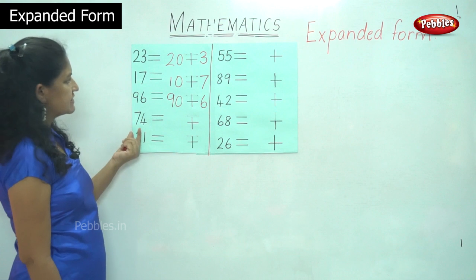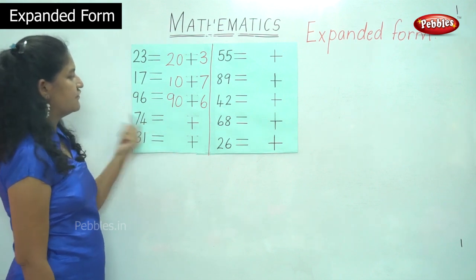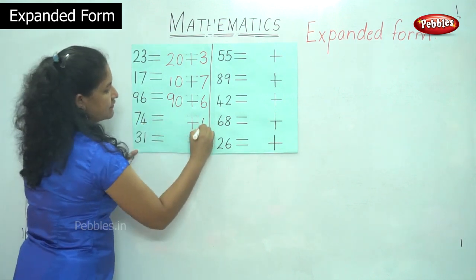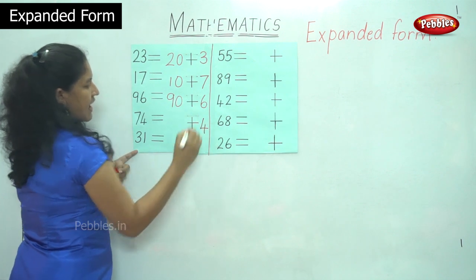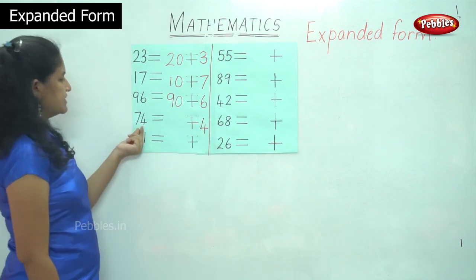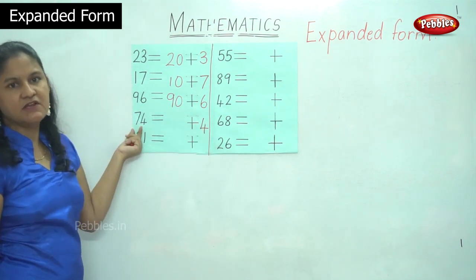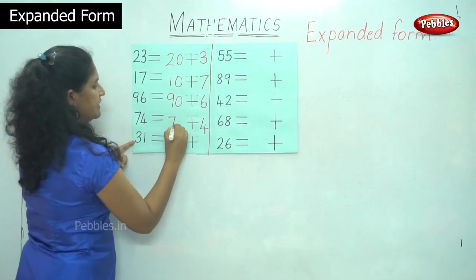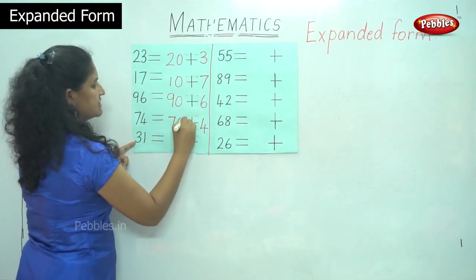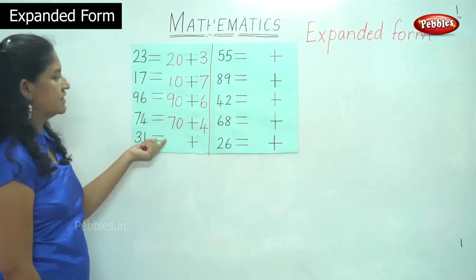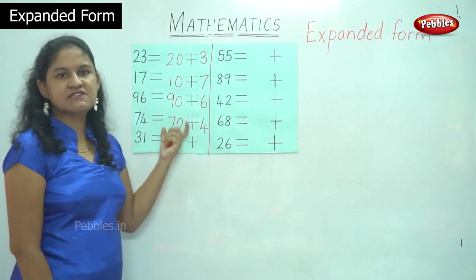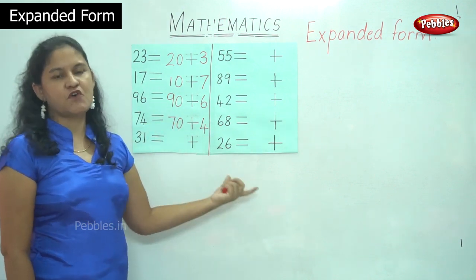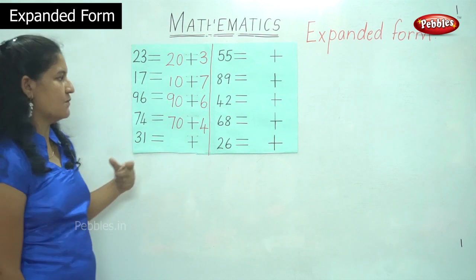The next number is number 74. In the ones place I have number 4 and in the tens place I have number 7. 7 tens is 70. So 74 is equal to 70 plus 4. This is the expanded form of the number 74.